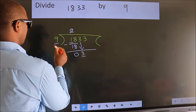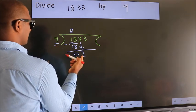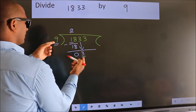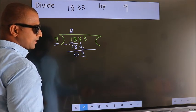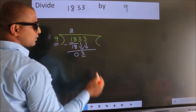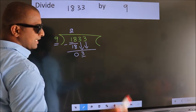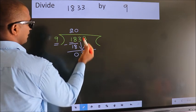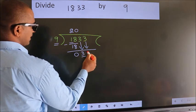Here we have 3, here 9. 3 is smaller than 9, so we should bring down the second number. And the rule to bring down the second number is put 0 here. Then only we can bring down this number.